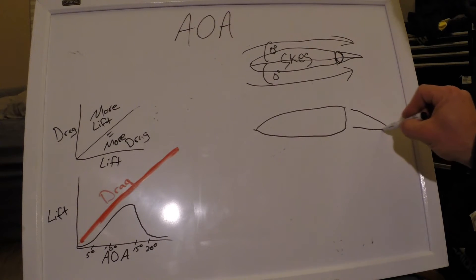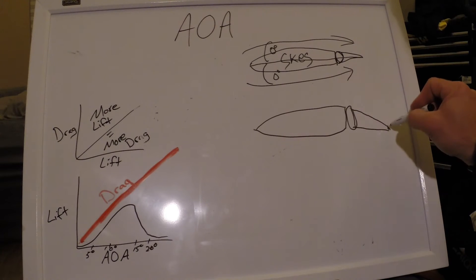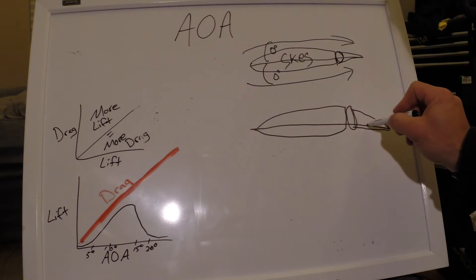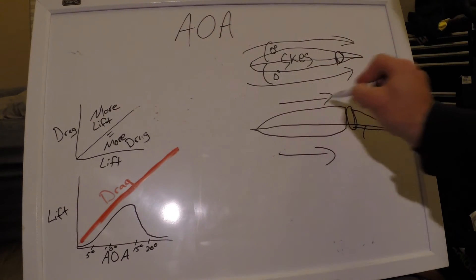If we look at our skeg again here, this time our rudder is deflected a little bit. We draw our cord line now, well we can see we have a little bit of a positive cord line.